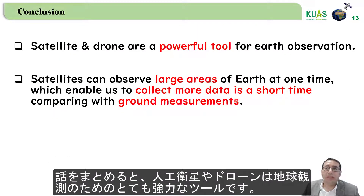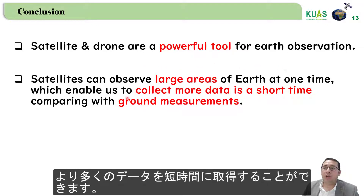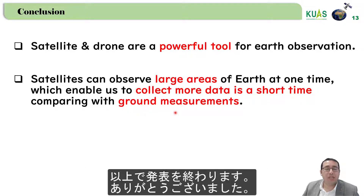In conclusion, satellite and drone are very powerful tools for Earth observation. Satellites can observe large areas of the Earth at one time, enabling us to collect more data in a short time compared with ground measurement. That's all. Thank you.